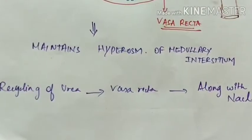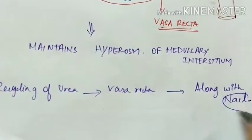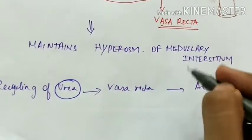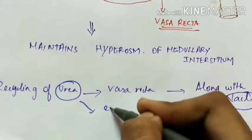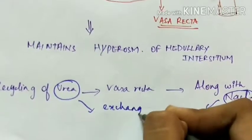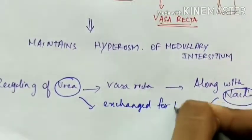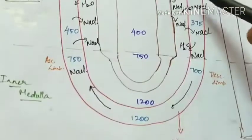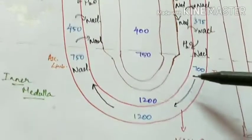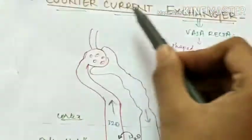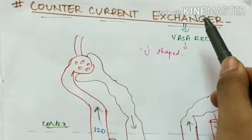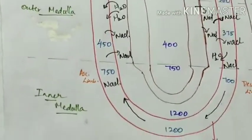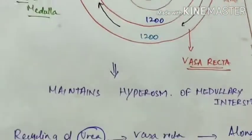Recycling of urea also occurs through Vasa Recta along with sodium chloride, as sodium chloride and urea are exchanged for water between the ascending and descending limbs of Vasa Recta. This system is called the counter-current exchanger. This concludes the counter-current multiplier and counter-current exchanger, which are the two components of the counter-current mechanism.